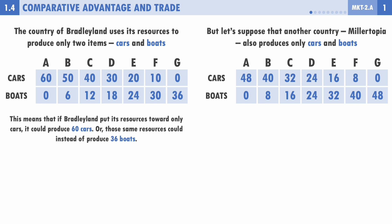This also tells us the opportunity cost: 60 cars costs 36 boats and vice versa. If you were at point G and moved production from zero cars up to 60 cars, you'd have to give up all 36 boats.